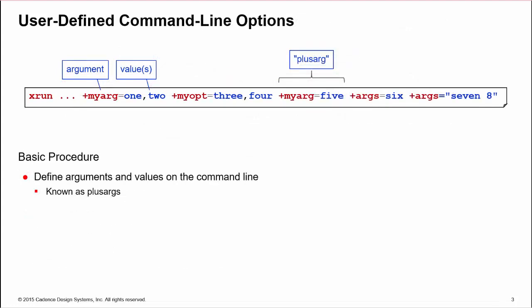A command line option consists of a named argument and its values, collectively known as a plus arg. In fact, plus args are a Verilog feature, and UVM simply provides an interface to this functionality.